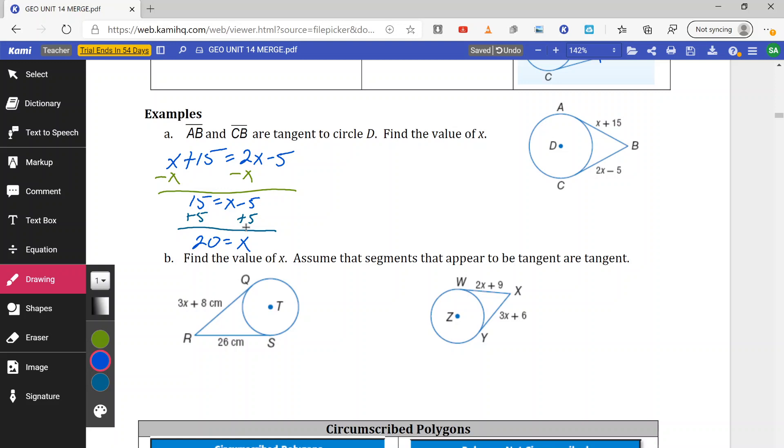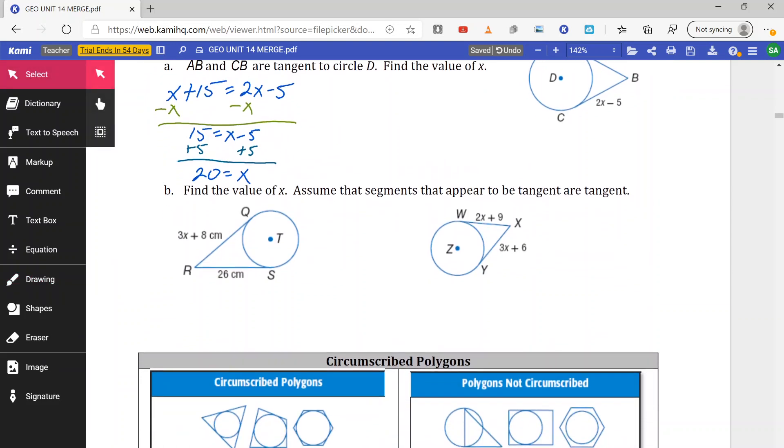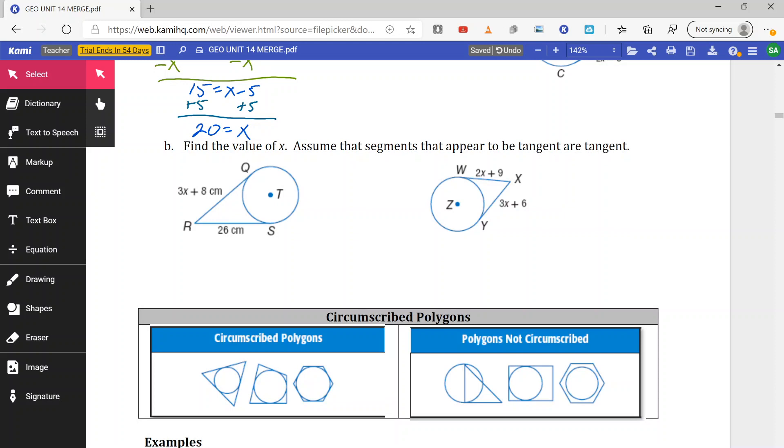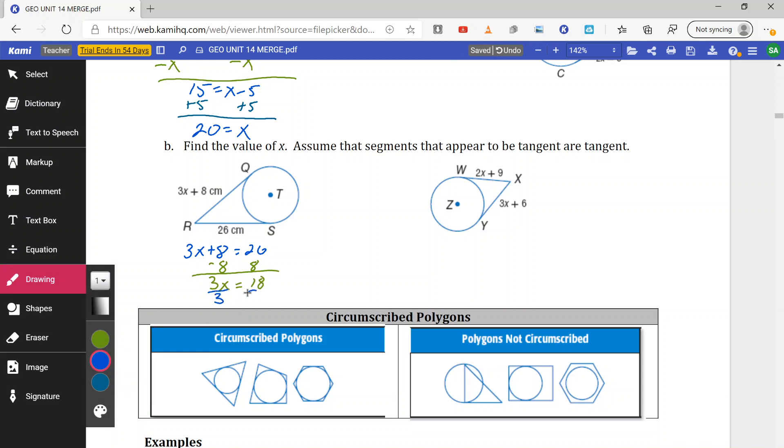And same with letter B here. Find the value of X. Assume segments that appear to be tangent are tangent. So here we have QR and RS. They appear to be tangent. They meet at point R. So they have the same exterior point. So we can set these two equal to each other. So we can say 3X plus 8 equals 26. Solve for X. We subtract 8. So 3X equals 18. Divide by 3. And X equals 6. And we would do the same thing for circle Z. WX and XY, they meet at point X. I would set those two equal to each other and solve for X.